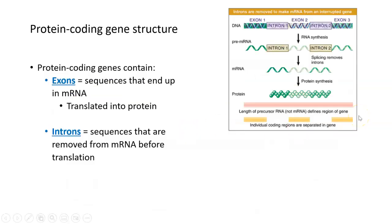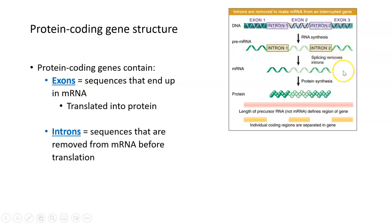Inside the coding region of a protein coding gene, there are two different types of sequences: exons and introns. They both exist inside the coding region — the part that will ultimately become the amino acids in the protein. At the DNA level, we might have three exons and two introns. After transcription, the RNA still has three exons and two introns. But as the mRNA matures, those introns are removed, leaving only three exons. Exons are the sequences in the DNA that will ultimately end up in the RNA and become translated into protein.